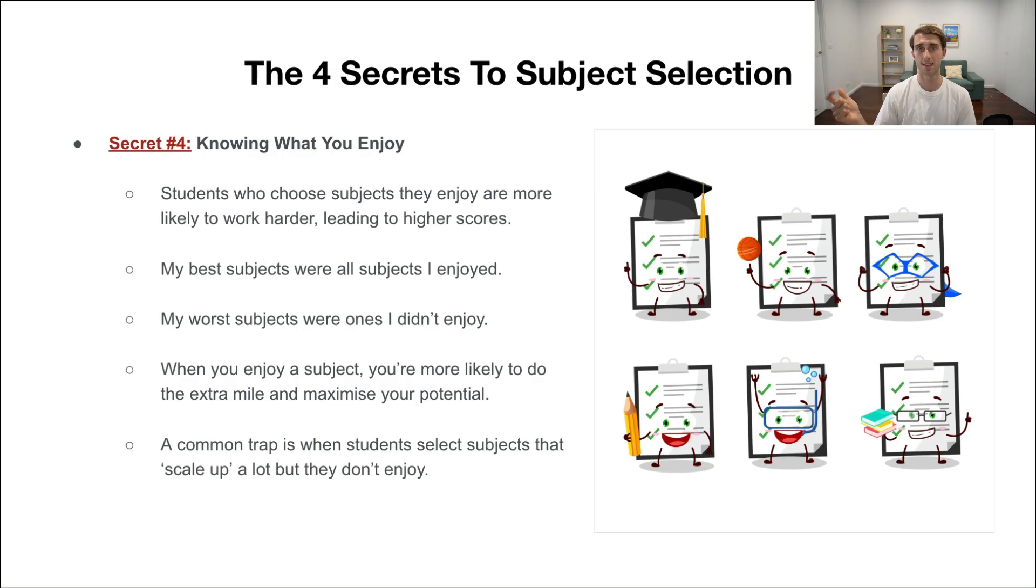What that means is to get an average score in specialist maths, if there wasn't scaling, would be very hard because you're competing against a group of students who are statistically higher performing than other subjects. That's why specialist maths scales up so much—not because it's harder, which it probably is quite a difficult subject, but it doesn't actually scale up for that reason. It scales up because the students in general who sit specialist maths are of a higher level of academic excellence. They end up getting higher average ATARs. So it scales up more to make it level, to make it an even fair playing field.